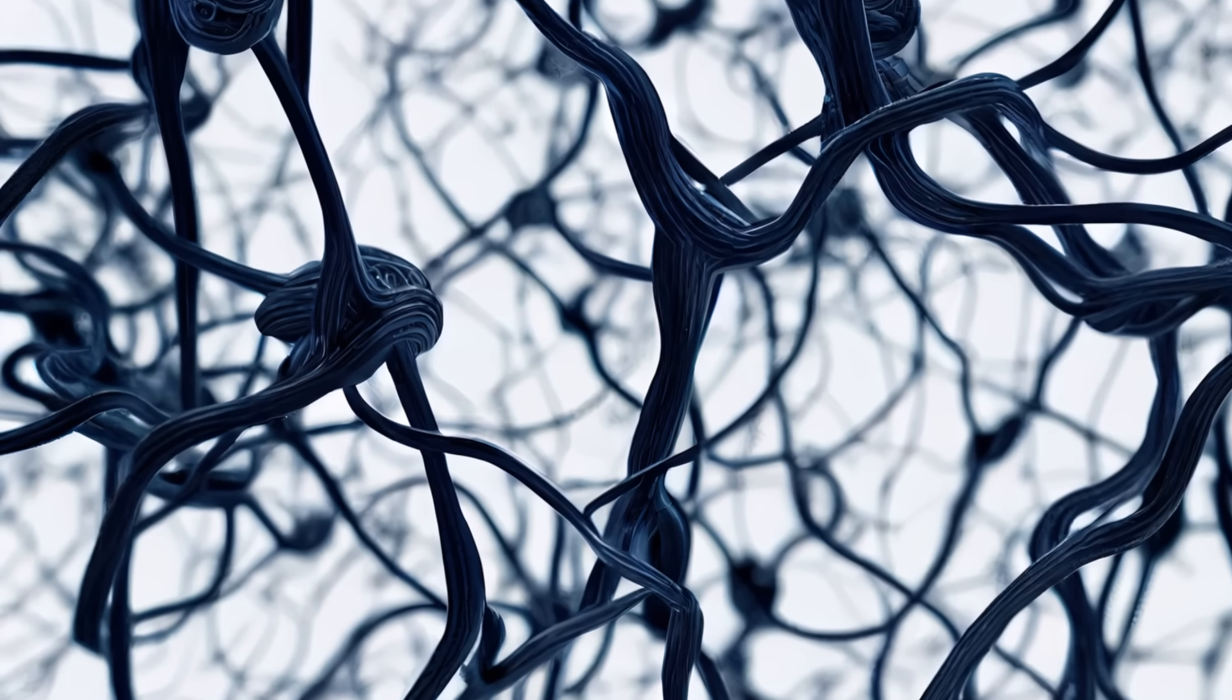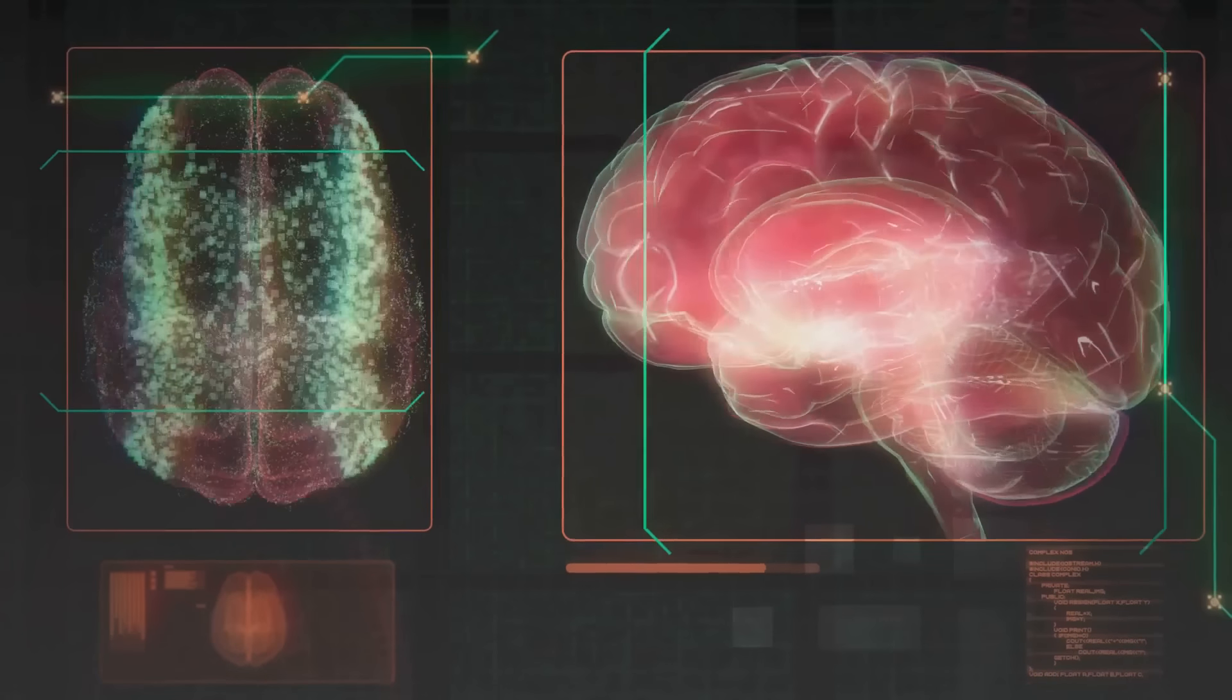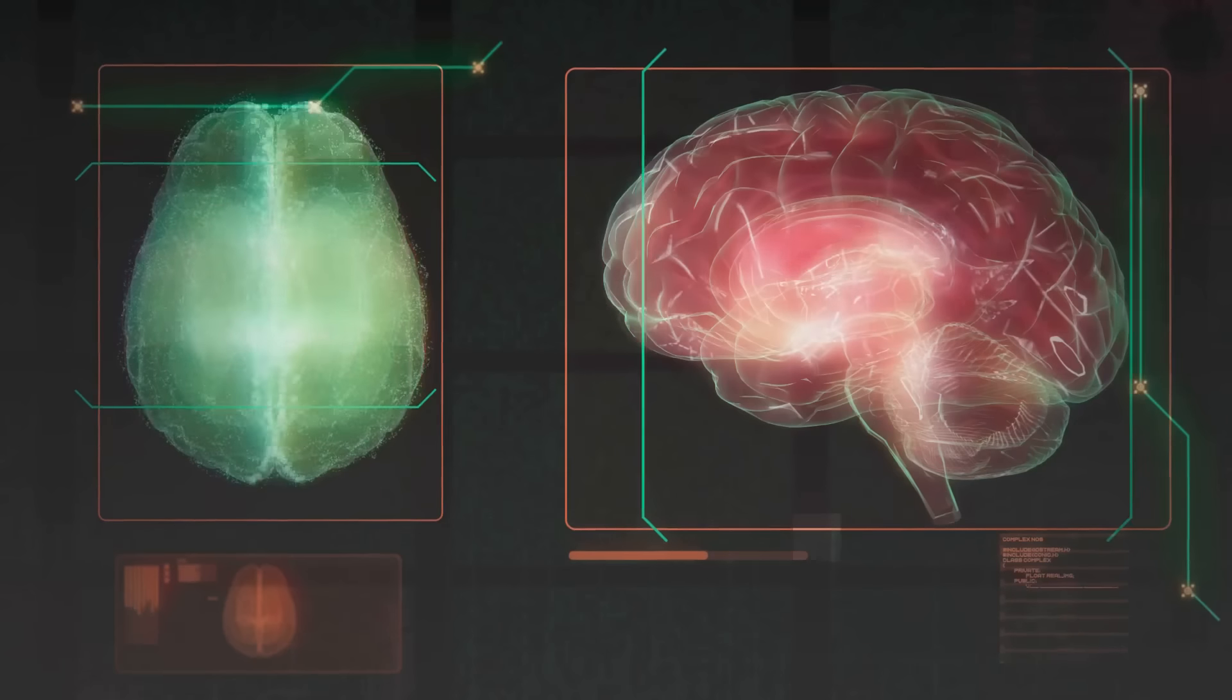Similarly, within the confines of our heads exists an intricate network of billions of neurons. This neural network, the human brain, is an enigmatic realm of thoughts, emotions, dreams, and consciousness. It is as vast and complex as the universe itself, with an estimated 100 billion neurons intricately interconnected.